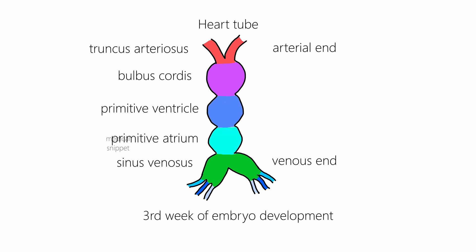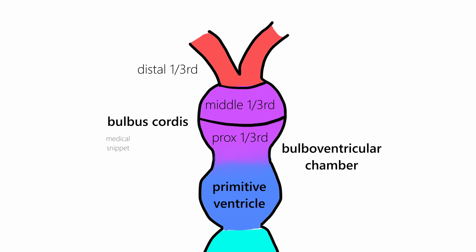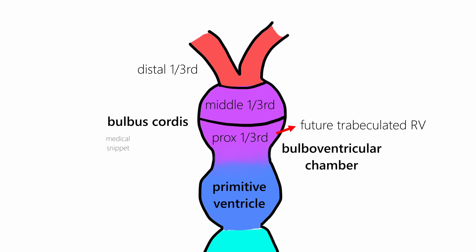Bulbus cordis can be divided into three parts: proximal one-third, middle one-third, and distal one-third. The proximal one-third of bulbus cordis fuses with the primitive ventricle to form the bulboventricular chamber. The sulcus between the primitive ventricle and the bulbus cordis is called the bulboventricular sulcus. The proximal one-third later forms the trabeculated part of the right ventricle, and the remaining primitive ventricle forms the trabeculated part of the left ventricle.